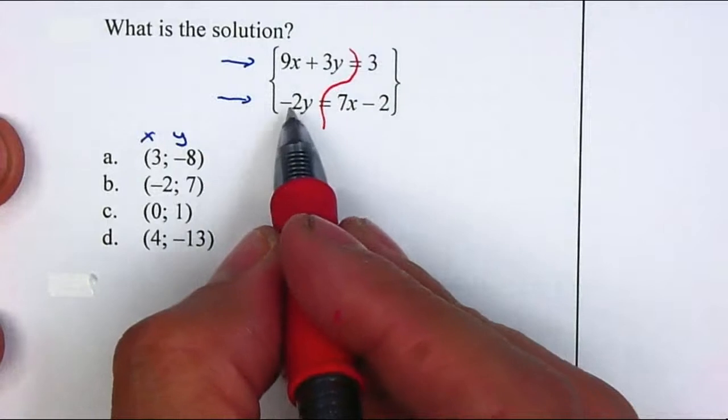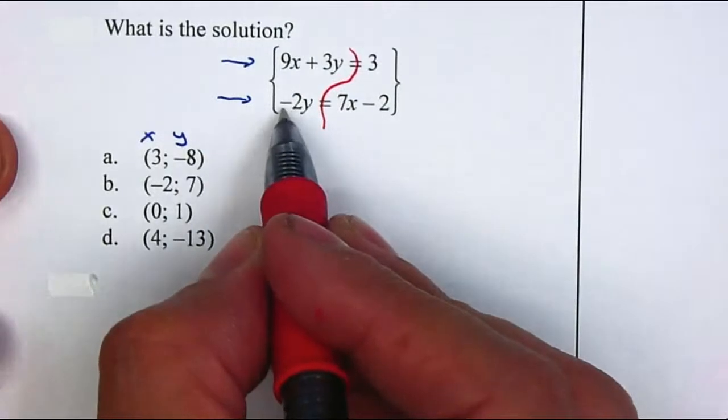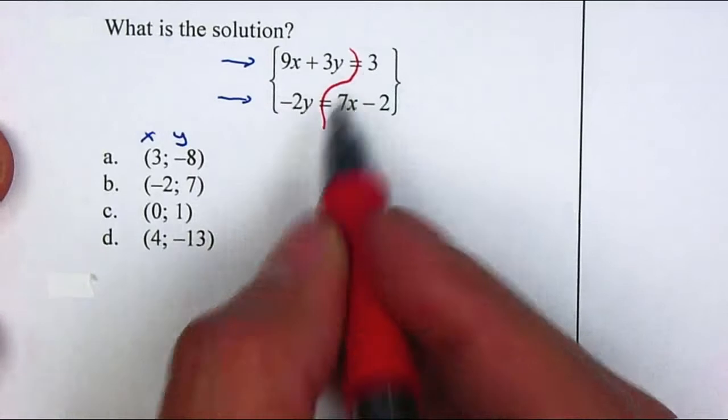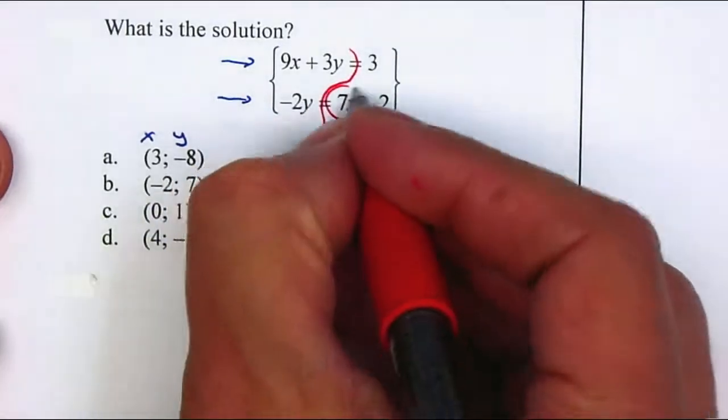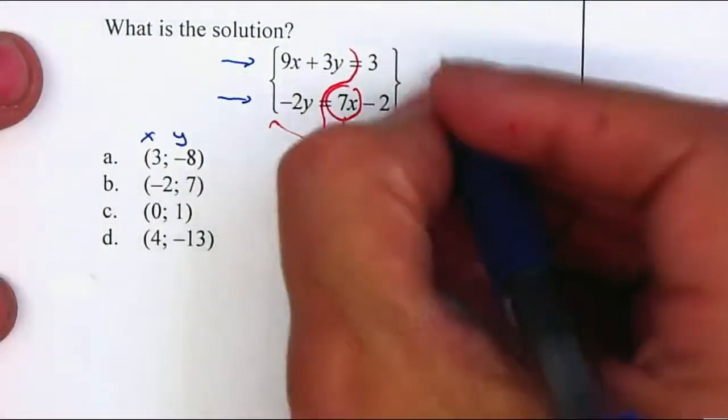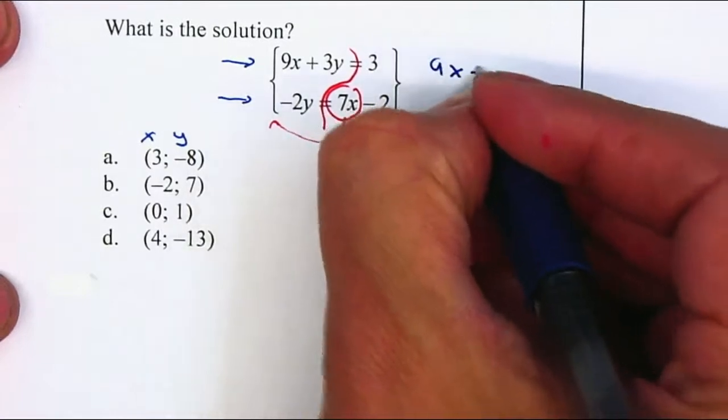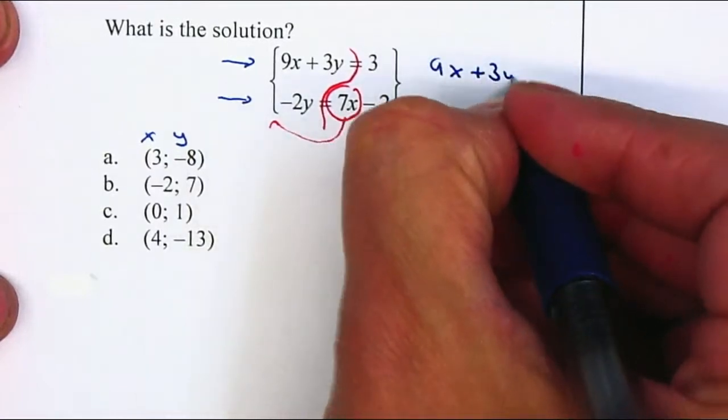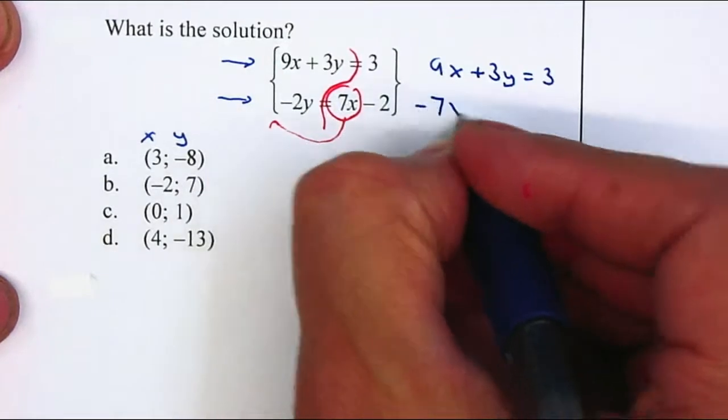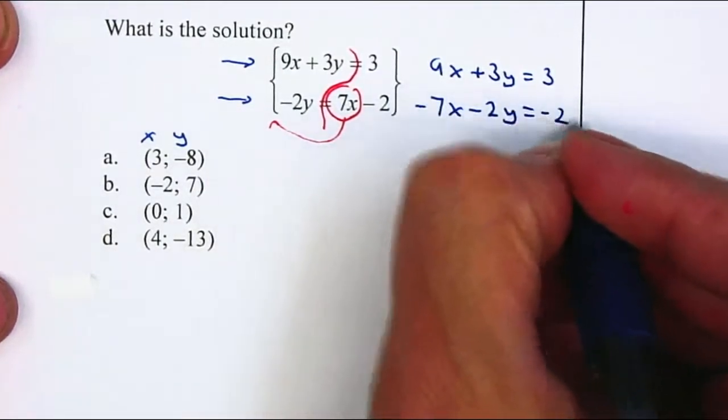If you notice, the second equation is now in standard form. Standard form has to be the x, the y, the equal sign, and the number. Therefore, I'm going to move my 7x to the left will become a negative 7x. My first equation will stay exactly as it is. My second equation, the x moves to the left becomes a negative 7x minus 2y is equal to negative 2.